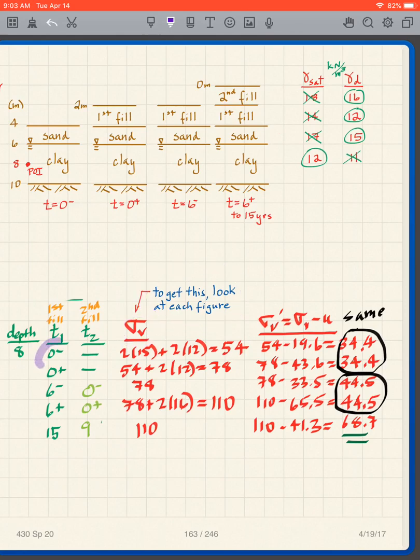At six minus I look here, at six plus I look here, at 15 I look here. So I get all my sigma v's by simply looking at the correct figure. Then I simply use sigma v prime is equal to sigma v minus u and I get all these values. Now notice, again as we found before, at t equals zero minus and t equals zero plus the effective stress doesn't change. It's the same. Why? Because no time has passed.